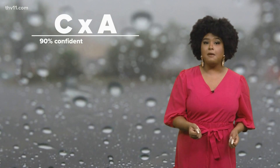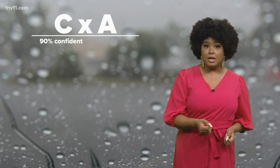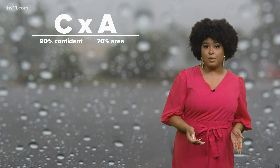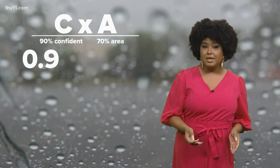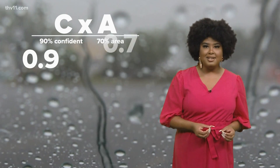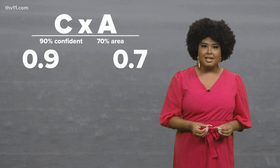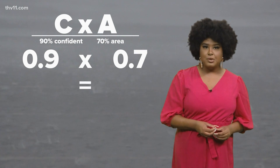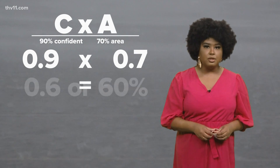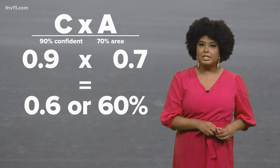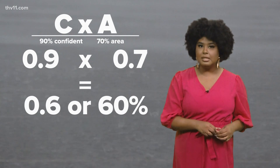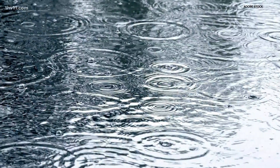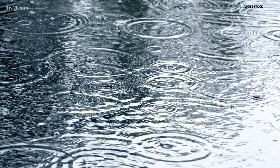So let's say a forecaster is 90% confident that rain will occur over 70% of the forecast area. C is 0.9 and A is 0.7 — you get a percentage of roughly 0.63, or about a 60% chance of rain.